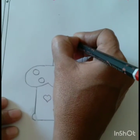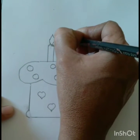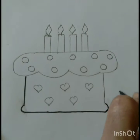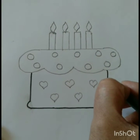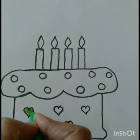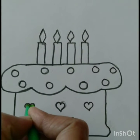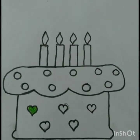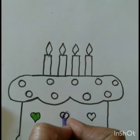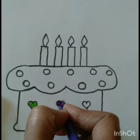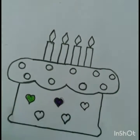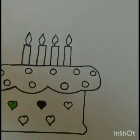Children, make a thicker border to the picture so that our color will not go out. Children, now we are coloring the heart shapes with green and purple colors, and then with pink colors.